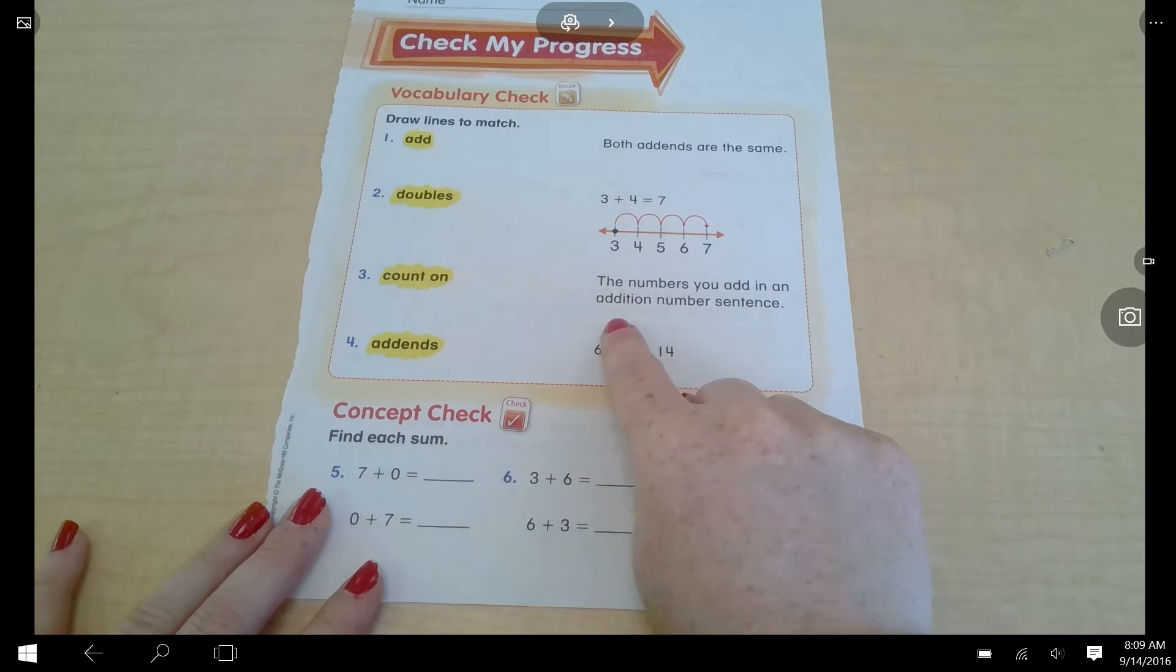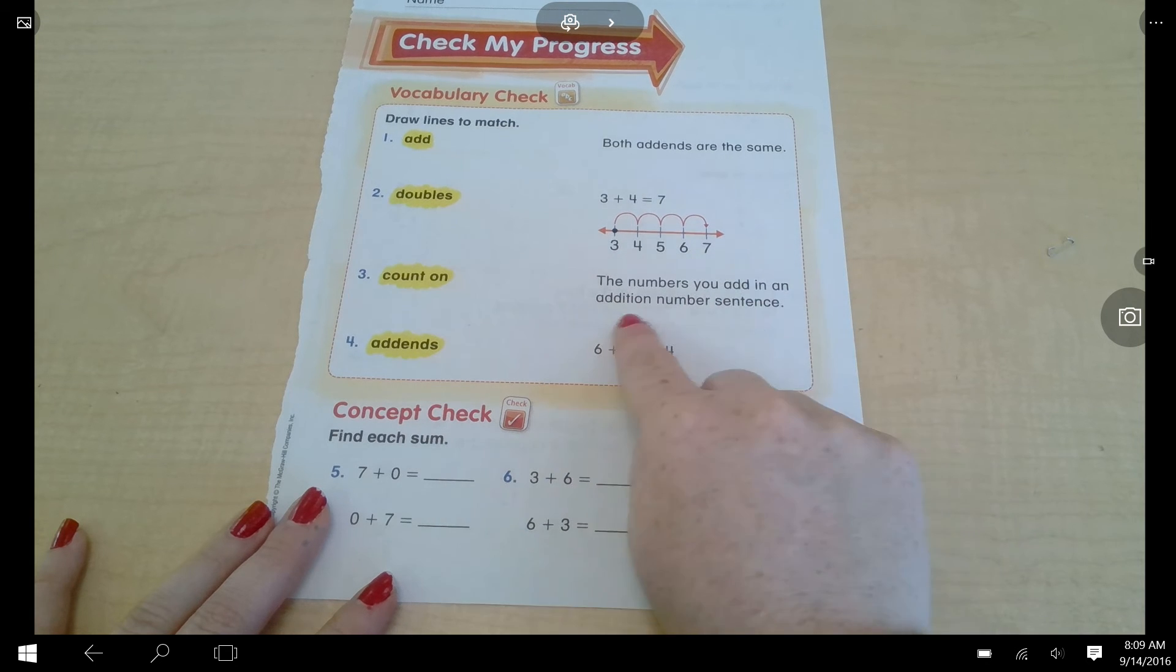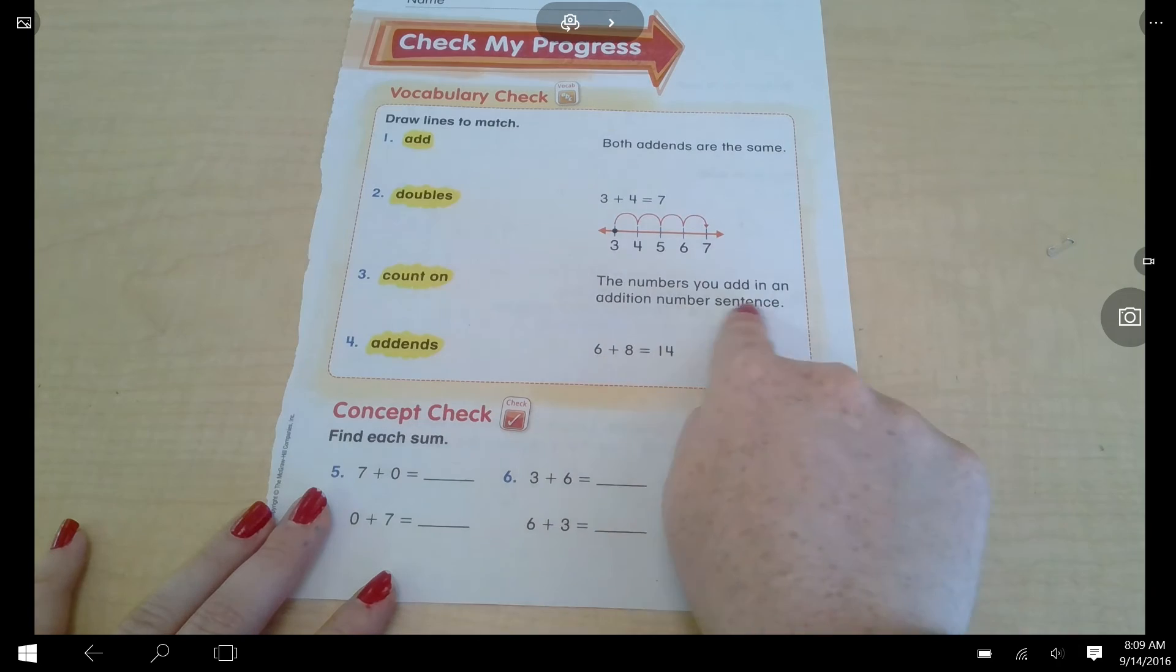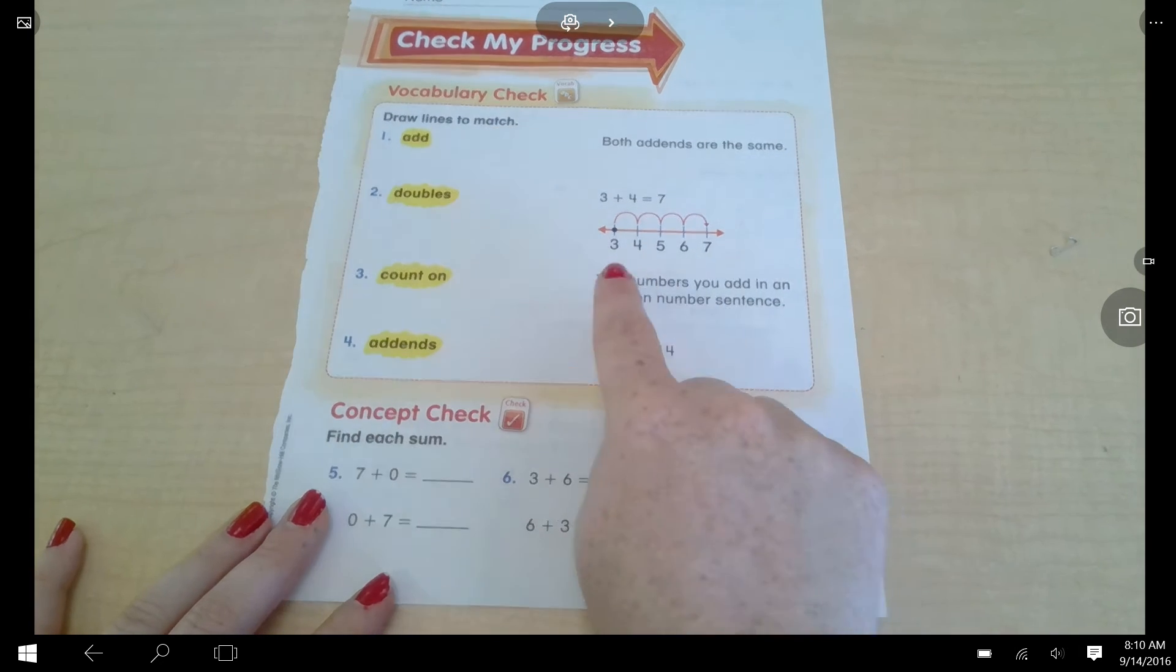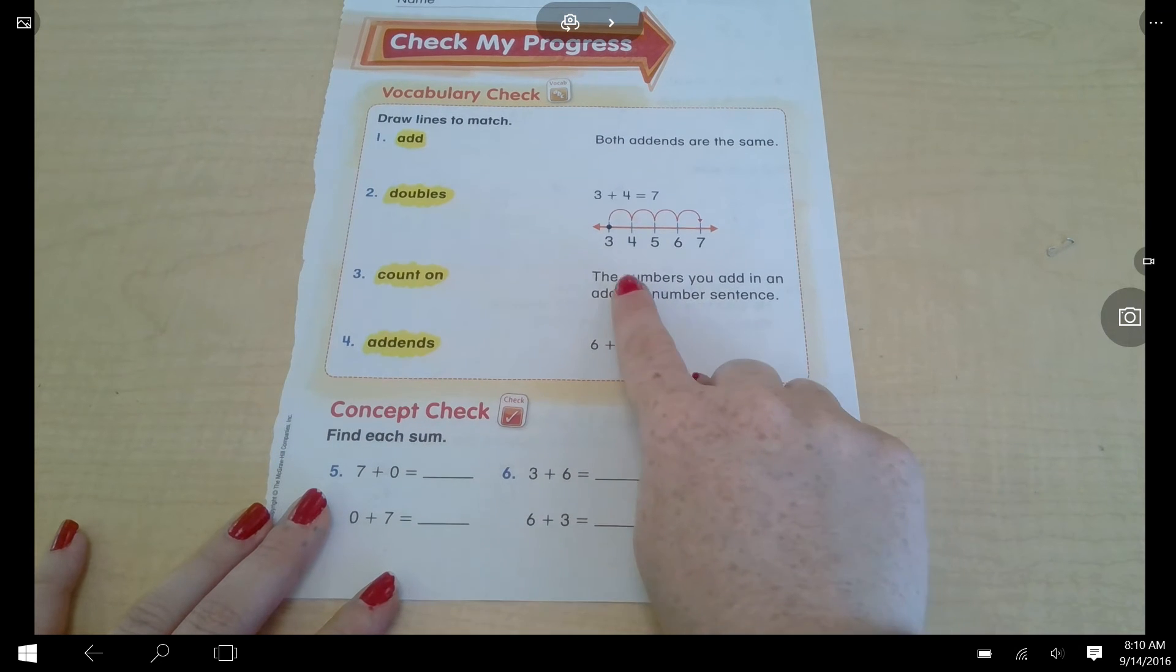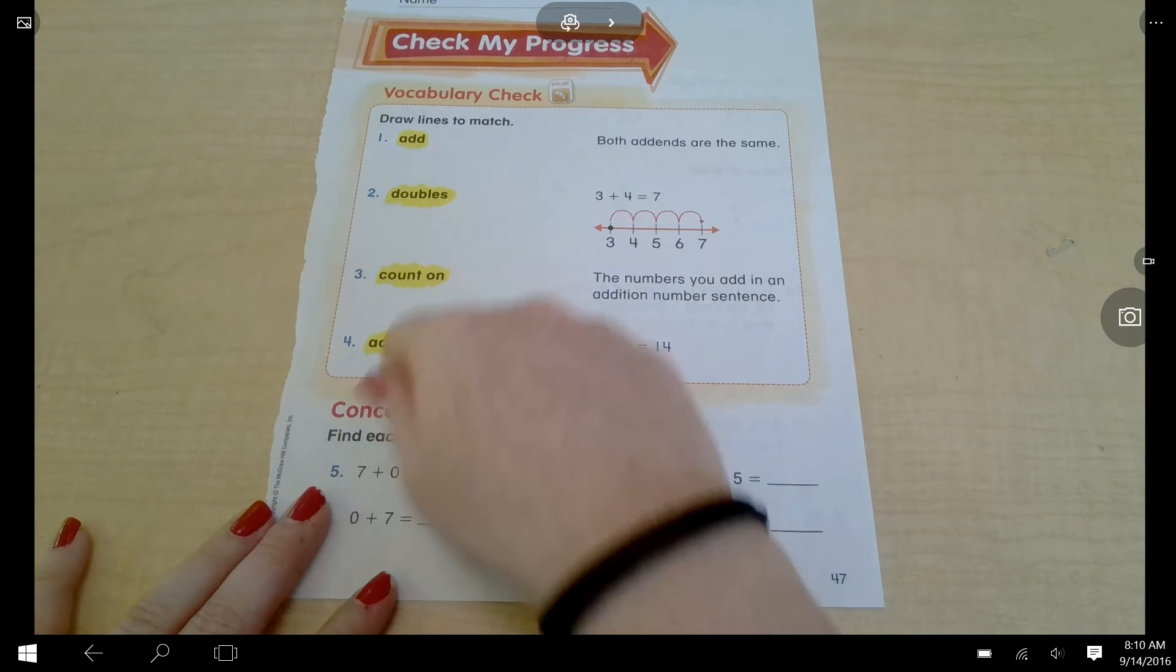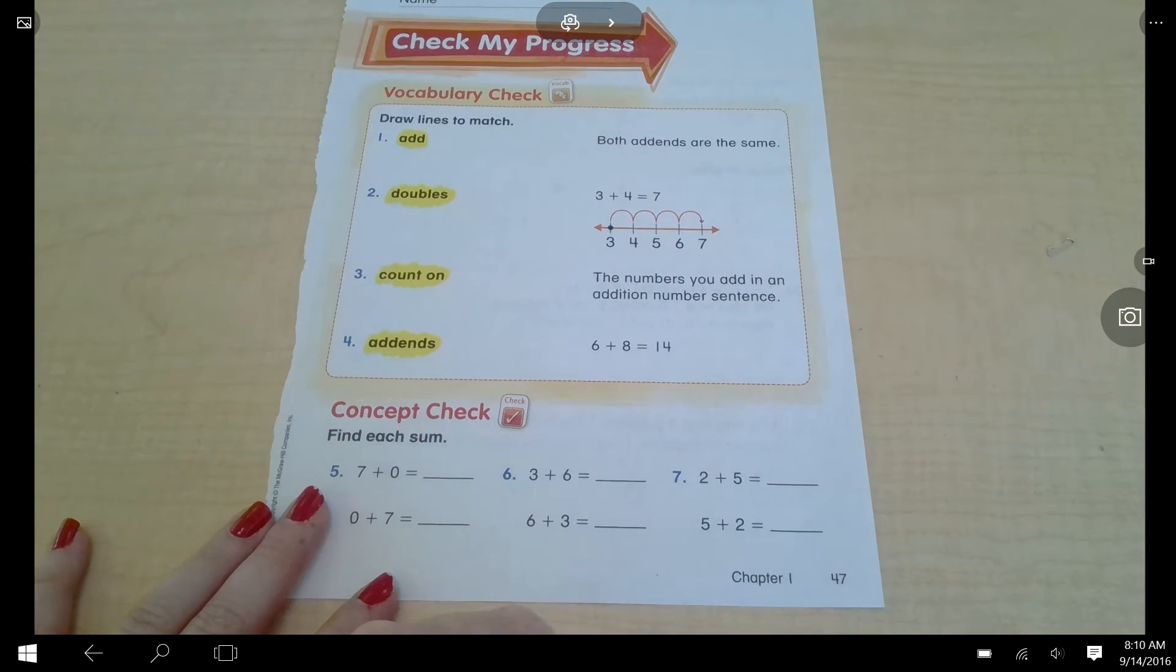The numbers you add in an addition number sentence. The numbers you add in an addition number sentence, is that add? The numbers you add in an addition number sentence, is that doubles? The numbers you add in an addition number sentence, is that count on? The numbers you add in an addition number sentence, is that addends? Draw your line now. You should only have one word on the left side that doesn't have a line drawn to it yet.